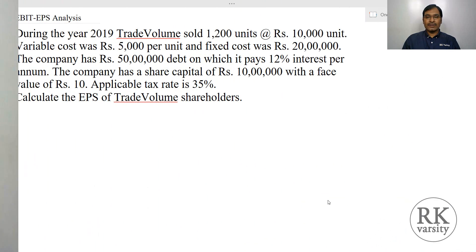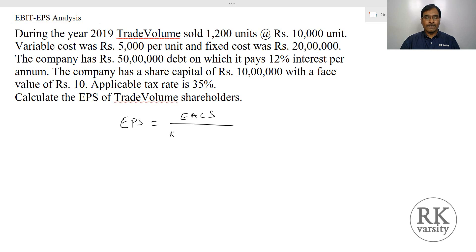I will show you how to calculate Earnings Per Share with an example. Using the values given in this example, we need to calculate Earnings Per Share. Earnings Per Share, denoted as EPS, equals EACS — that is, the amount available to common shareholders — divided by the number of shares. We will derive EACS using EBIT Analysis.